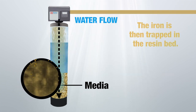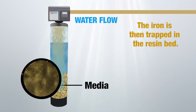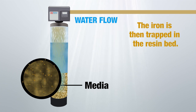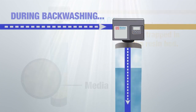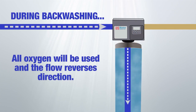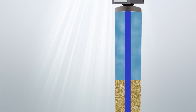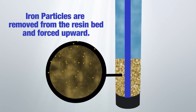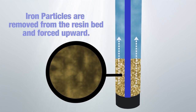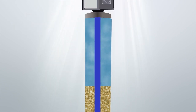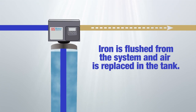But after a while of trapping contaminants, the media needs to be backwashed. That means the water flows backwards through the media down the drain, which removes the contaminants that have been collected in the media bed.